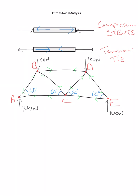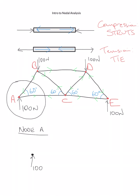We're now going to look at node A. Draw a circle around A to mark the node being analyzed. Tell your examiner what node you're working on by labeling it. We redraw that node: here's node A with 100 newtons going up, FAB (the force in member AB) going down, and FAC going to the right, with an angle of 60 degrees.